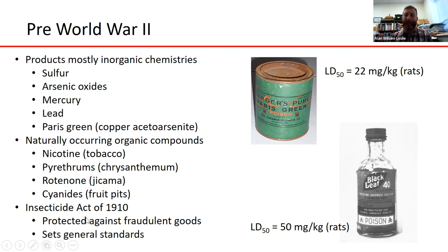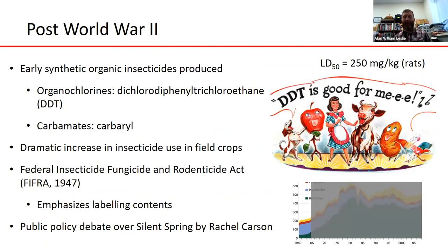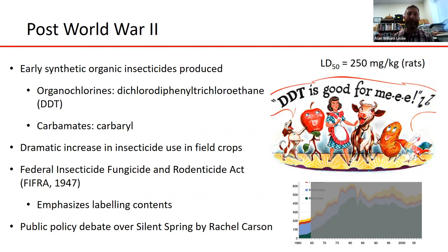Oversight of pesticide sales was controlled by the Insecticide Act of 1910, which essentially protected people against snake oil salesmen — it emphasized labeling and set standards for purity, but wasn't as concerned with human safety. Post-World War II, the war effort drove a lot of innovation in science and chemistry. Organic chemistry especially took off during this period, producing new chemicals that were offshoots of those developed for the war effort. Early synthetic organic insecticides produced were organochlorines, such as DDT — dichlorodiphenyltrichloroethane.